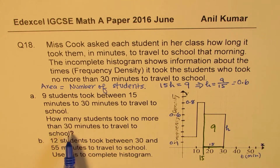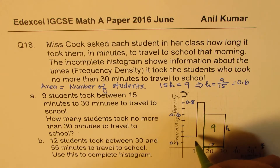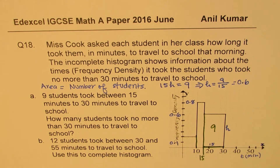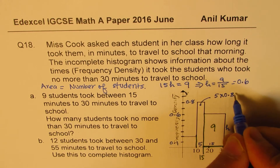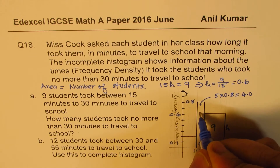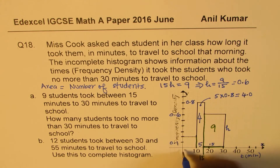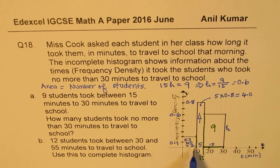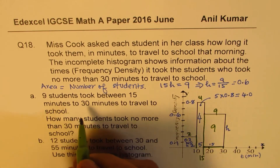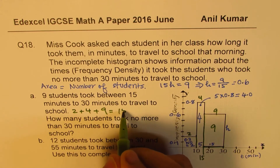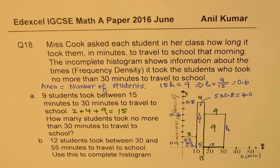Now, how many students took no more than 30 minutes? We have to find the total number of students within this group. For the interval 10 to 15, the width is 5 and the height is 0.8, so the number of students is 5 times 0.8, which is 4. For the interval 0 to 10, the height is 0.2, so 0.2 times 10 equals 2 students. Therefore the total is 2 plus 4 plus 9, which gives us 15 students. So the answer to Part A is 15 students.